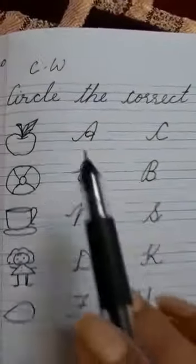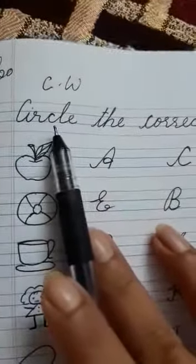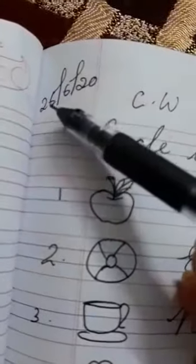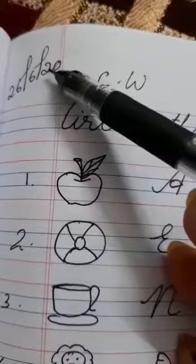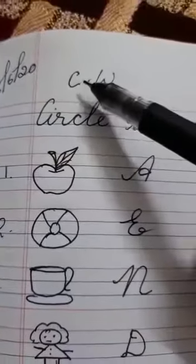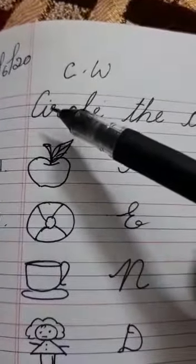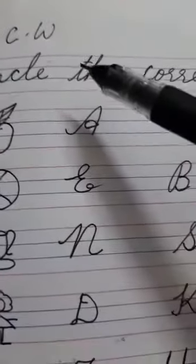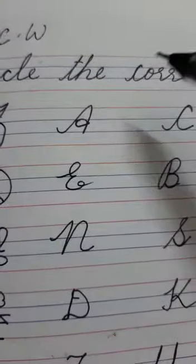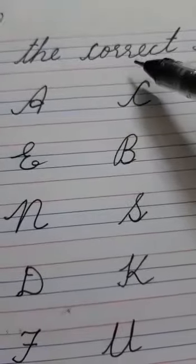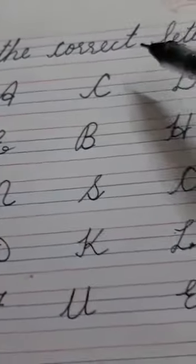Good morning children, today in English we will do circle the correct letter. You will write the date 26/6/20 CW, then you will write the heading CIRCLE THE CORRECT LETTER.